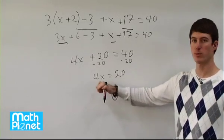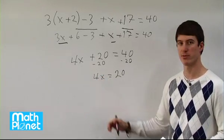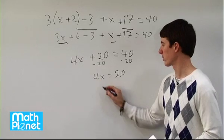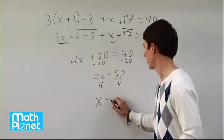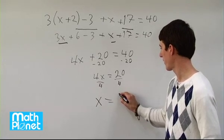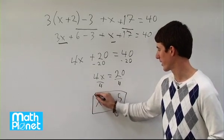Now we're almost done. We have one more inverse operation to get x by itself. We have 4 times x, and the inverse of multiplication is division, so we divide by 4 on both sides. x equals 20 divided by 4, which is 5. So the final answer is x equals 5.